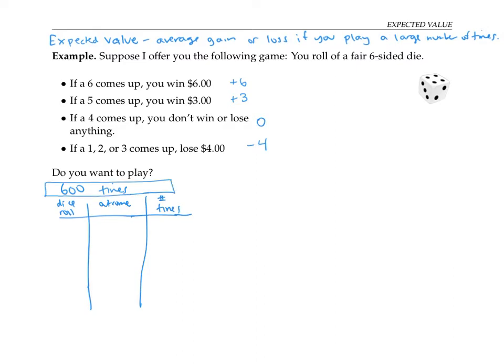So sometimes you might get lucky and roll a six. When that happens, you'll win $6. And if you're playing 600 times, you expect that to happen about 100 times, one sixth of the time, since there are six equally likely rolls you can get on the dice. Now you might also roll a five and win $3, and that will happen roughly 100 times out of 600. Also, if a four comes up, you don't win or lose anything, that'll happen about 100 times out of 600. And if a one, two or three comes up, you lose $4. Now that'll happen about 300 times, about half the time, three sixths of the time.